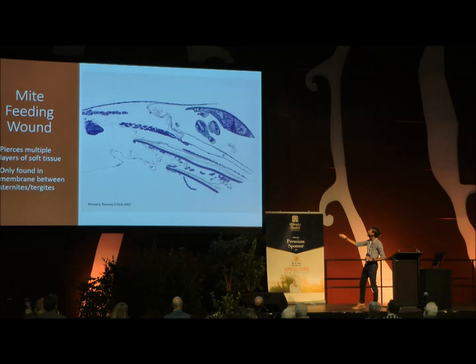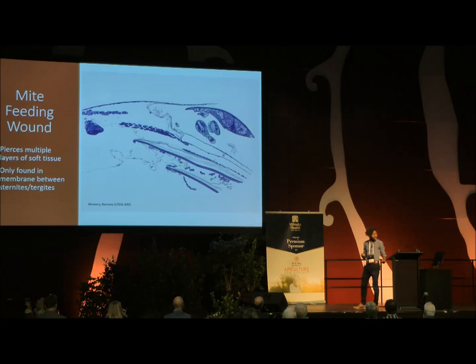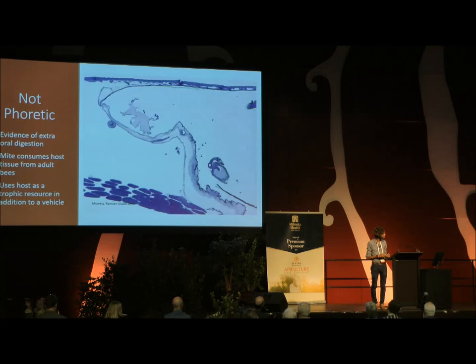Exhibit A: when Varroa destructor is not present between those plates of the bee, this tissue here runs all the way under this membrane and forms a very dense layer right here. However, when Varroa destructor is in between these plates, we find that whole sections of this tissue appear to be missing. And we have found a direct correlation with the amount of time that mite spends in between the plates of the bees with how much of that tissue is gone.